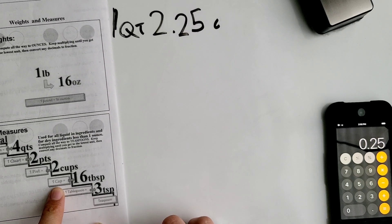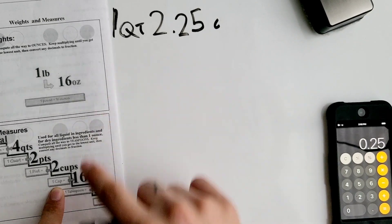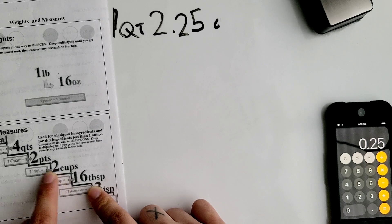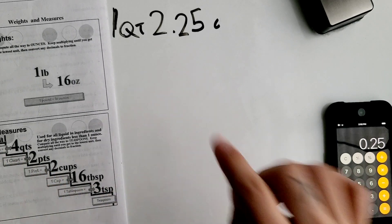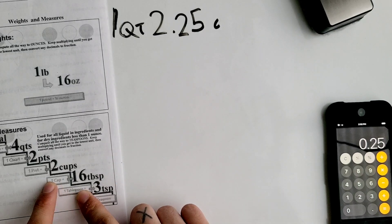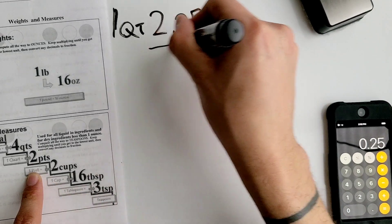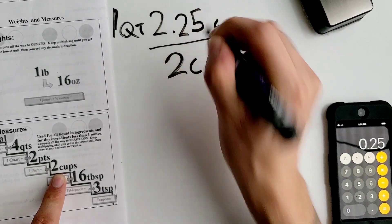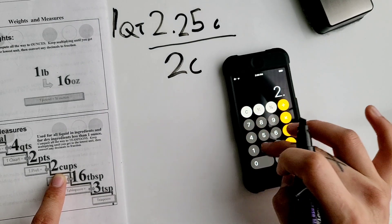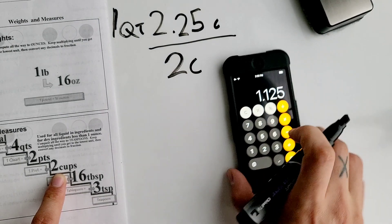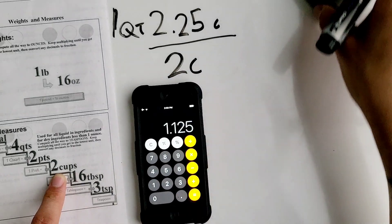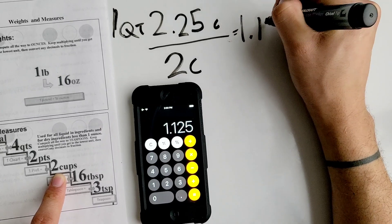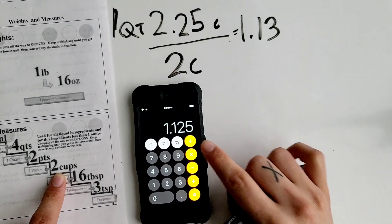We're on cups and we're trying to convert to quarts, so we have to go up the unit ladder. Whenever we're moving up, we have to divide. To convert cups into the next unit up — pints — we divide 2.25 cups by 2, since there are 2 cups per pint. So 2.25 divided by 2 equals 1.125.